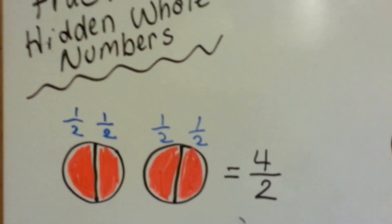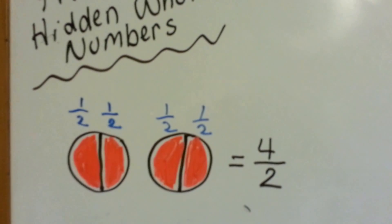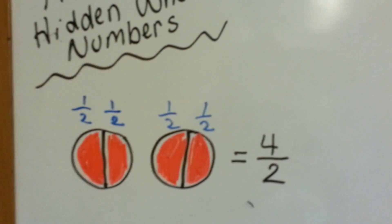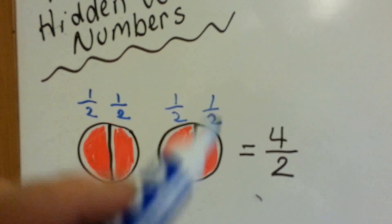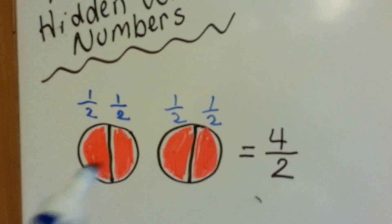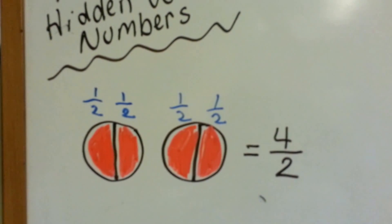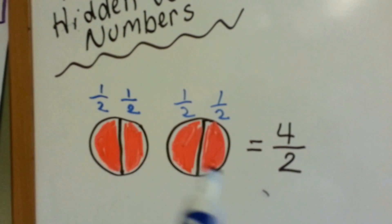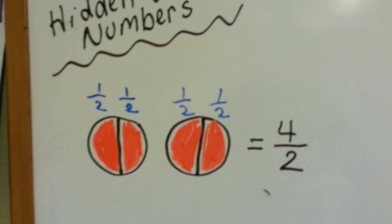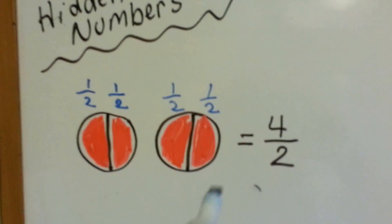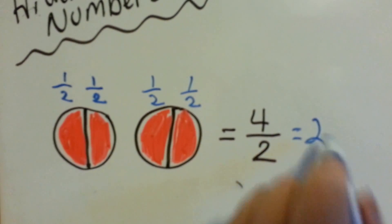Did you know that a whole number can hide inside of a fraction? It can. We have a half and a half and a half and a half. And when you put them together, we have two whole. If these were oranges cut in half, you'd have two whole oranges when you put them together. Four halves is equal to two.